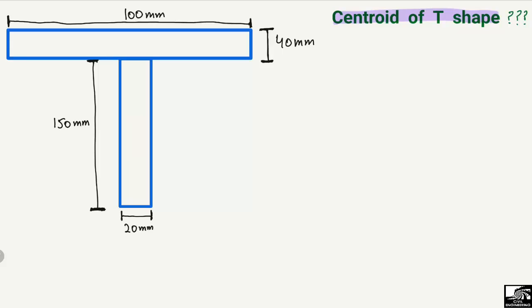We have a T-shape object given to us and we want to find out its centroid. All the dimensions of this T-shape beam are given. To find the centroid, we use the formula: ȳ = Σ(A·y) / ΣA — the summation of areas times centroid of each object, divided by the summation of areas.